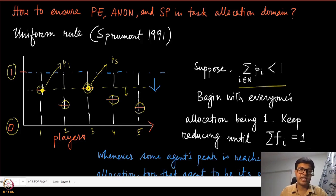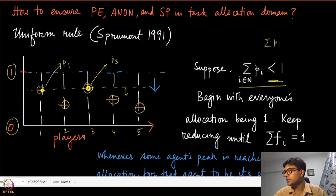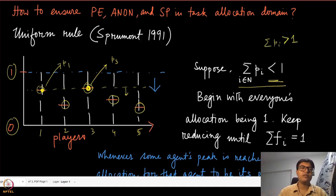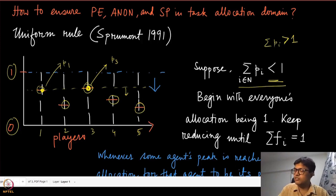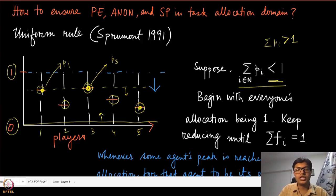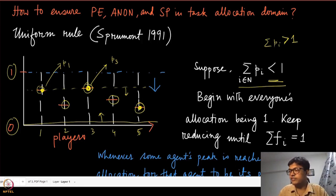Similarly, when the opposite situation is true — that is, the sum of the peaks is strictly greater than one — it means the sum of the most favorite shares exceeds the total job, so all agents need to be under-loaded. In that case, we look at the water level from the bottom: it uniformly goes upward, and the moment it hits one of these peaks, that share is allocated to that agent. For the remaining agents, the water level keeps increasing.